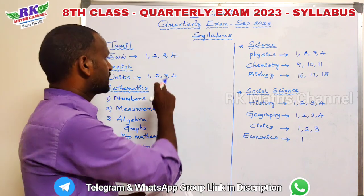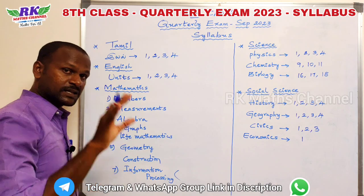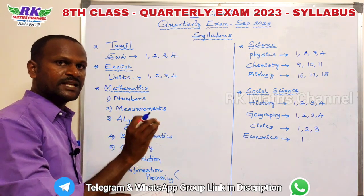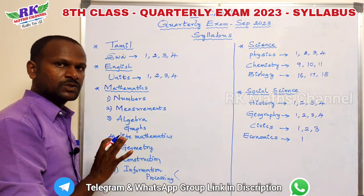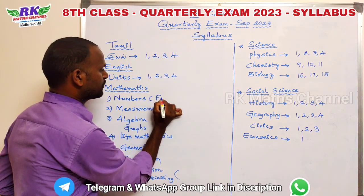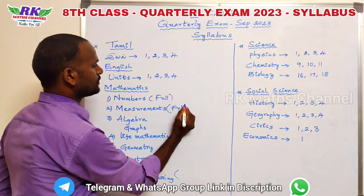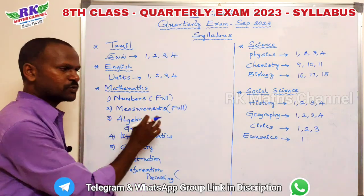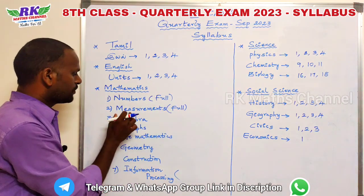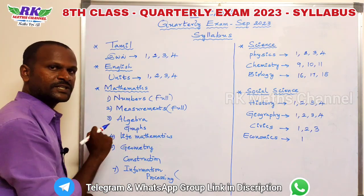The subjects are English, Science, Social, and Math. For Math, we have several units. The first unit is Numbers — numbers and measurements — and the first unit is complete. Units 1 and 2 are fully covered, and after 3 units it is full.